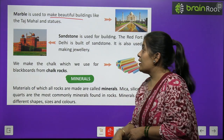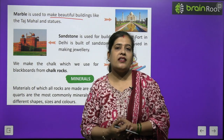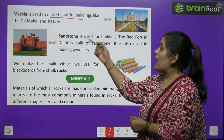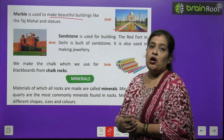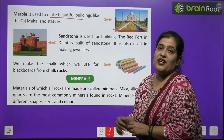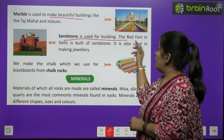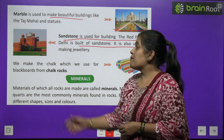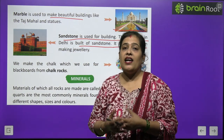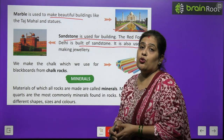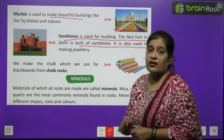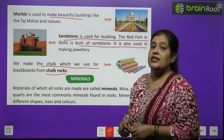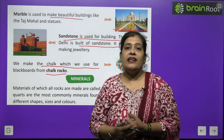Marble is used to make beautiful buildings and statues, like the Taj Mahal. The Taj Mahal is made of white marble. Sandstone is used for building — the Red Fort in Delhi is built of sandstone. It is also used in making jewelry. Chalk rock is used to make chalk, which is used for writing on blackboards.